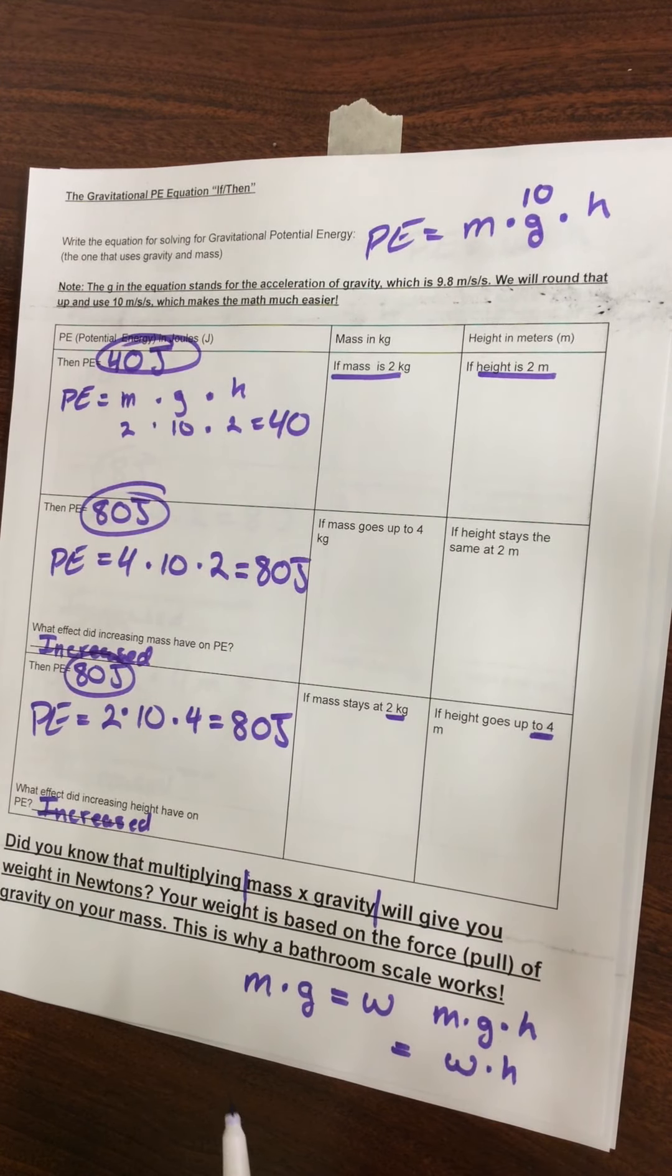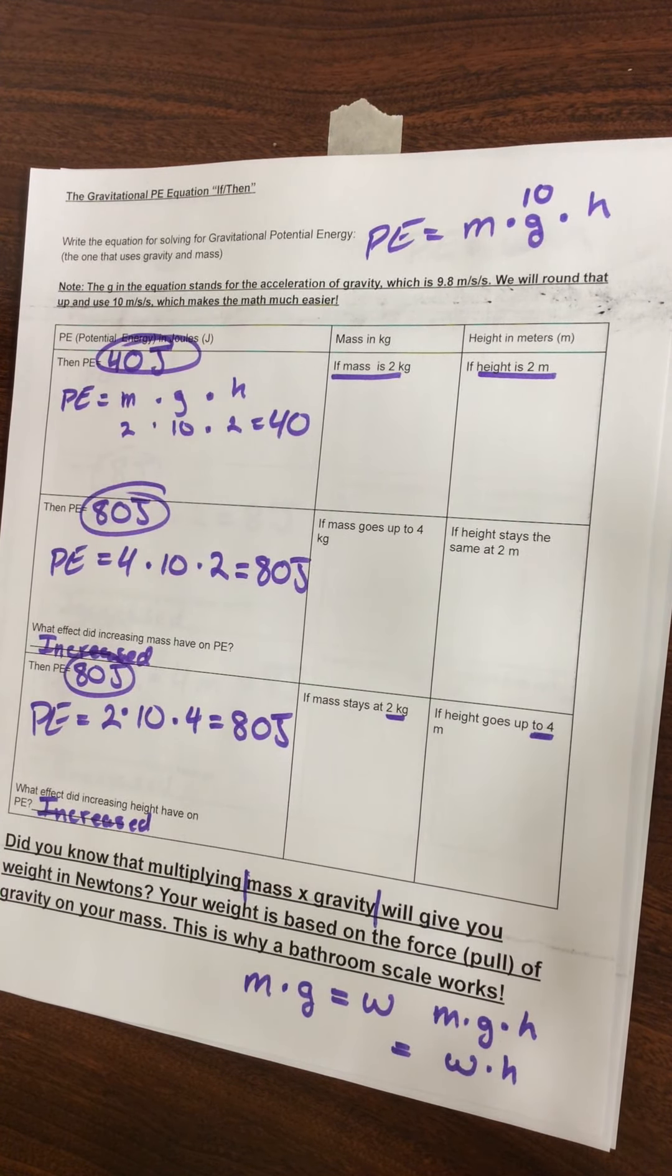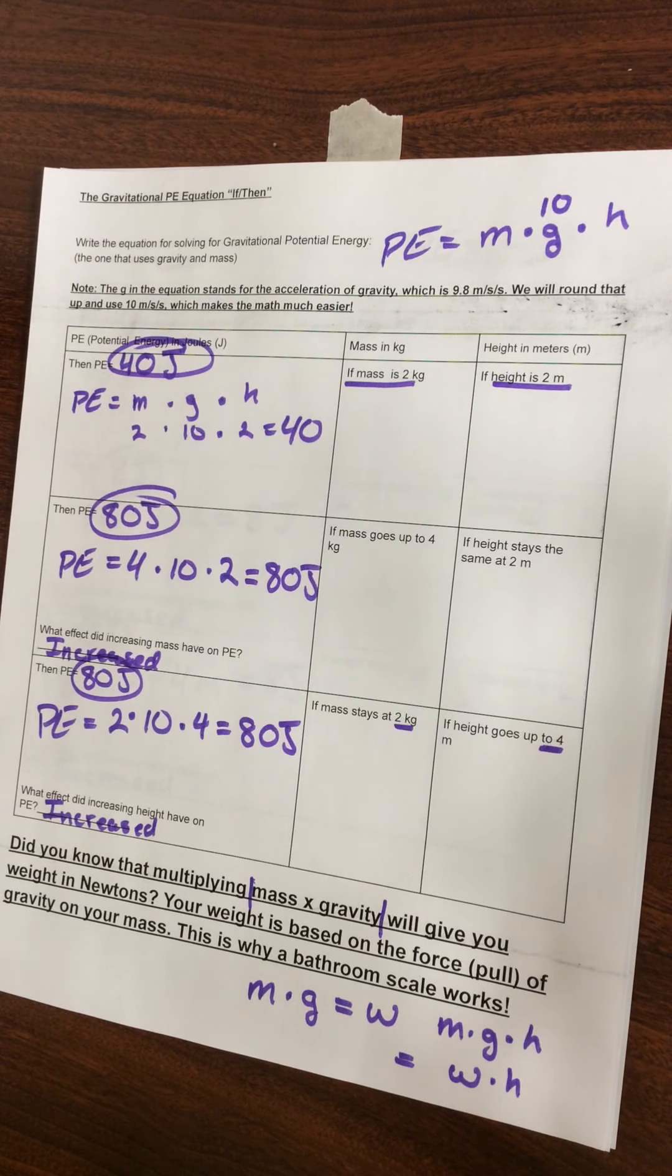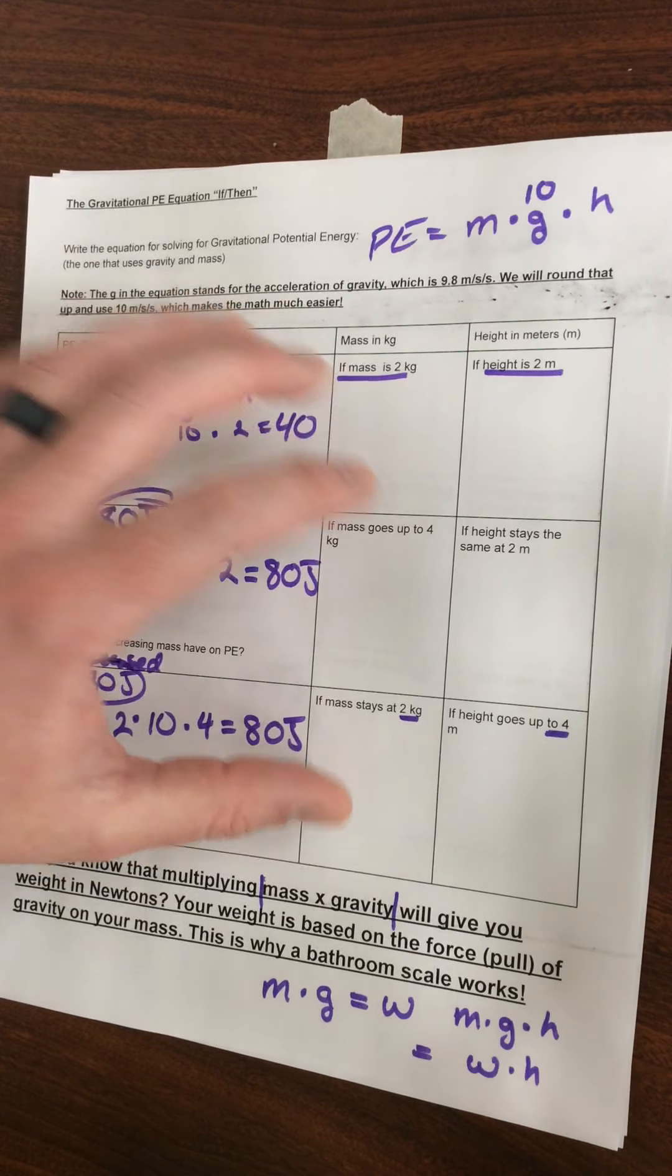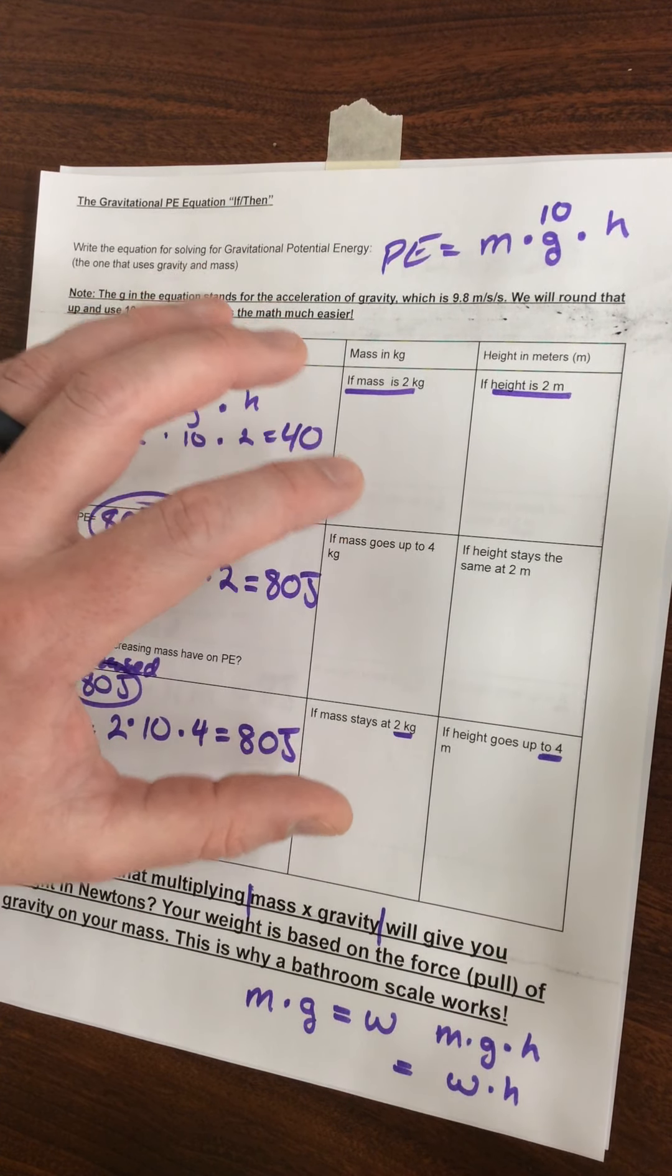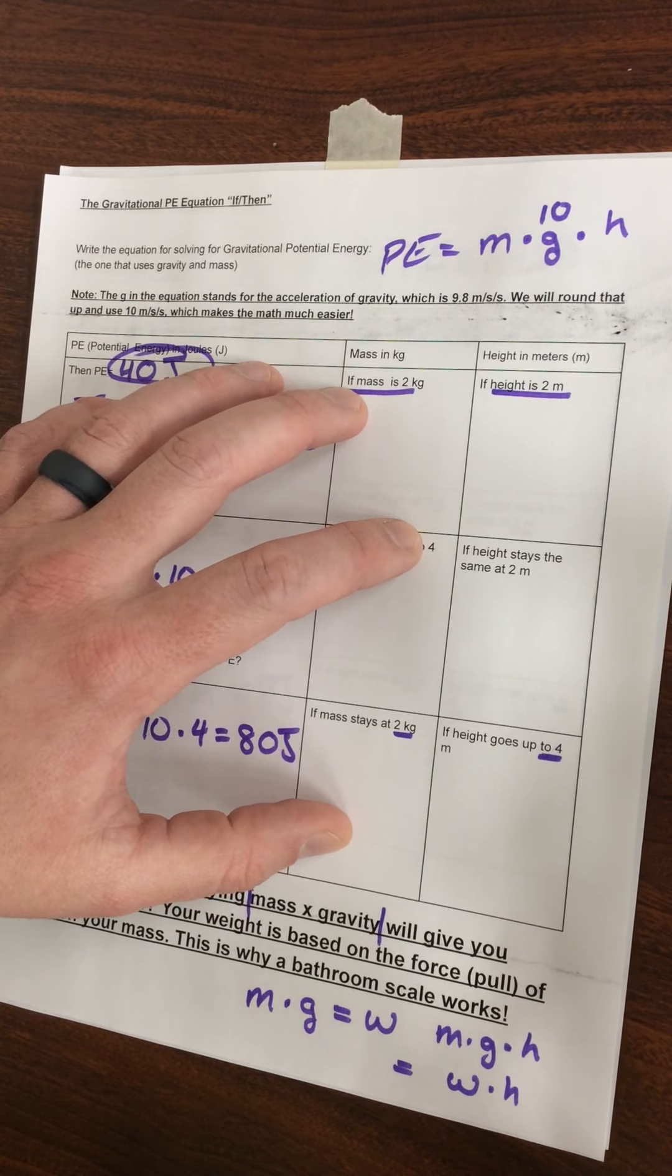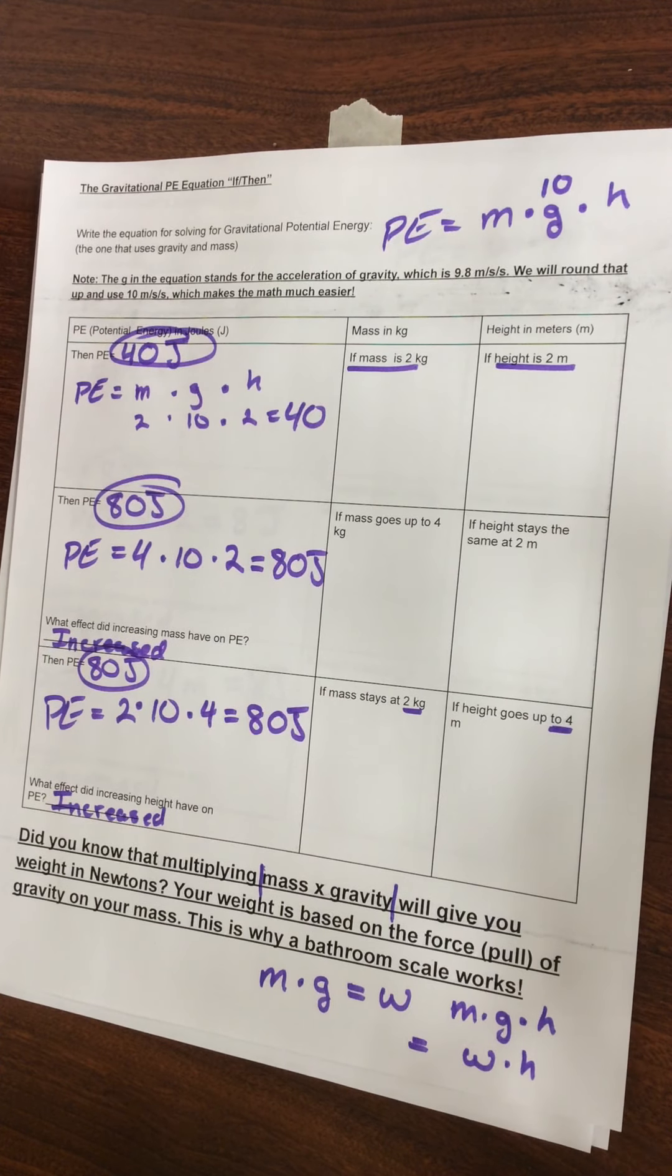Because this is a multiplication problem and all of our variables are being multiplied by each other, it makes sense that increasing one would increase your total. Take your time. Go through this. Whether you did it on the actual paper or on lined paper or blank paper, these are notes. They should go in your binder and these should be in your back pocket for when we start working on some problem solving for potential and kinetic energy. Thank you, guys. Goodbye.